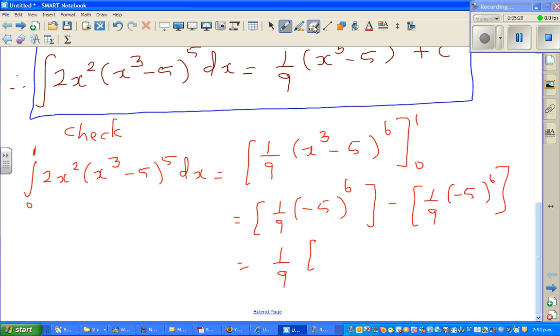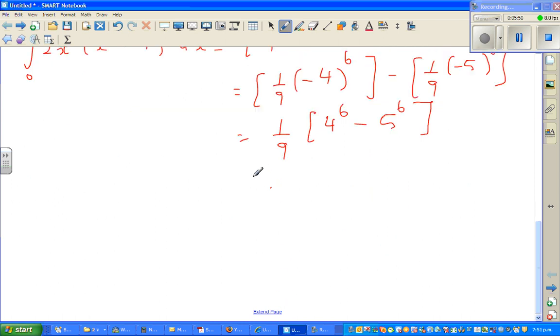So this should be 4, isn't it? So I've done a mistake here. Good to always check. So 1 minus 5 is 4. 4 to the power 6. So you can factor the, and this to the sixth power, this will be positive. So this is nothing but 4 to the power 6 minus 5 to the power 6.